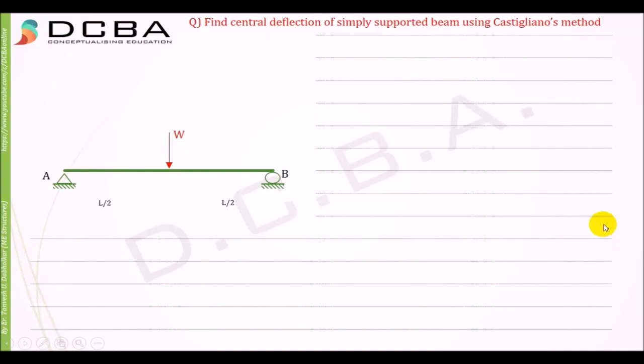Hello everyone, welcome to DCBA. Today we will solve this problem of simply supported beam using Castigliano's method. We have solved it using strain energy method previously. And if you have seen the previous video, you already know that first we need to identify the load which is causing the deflection.